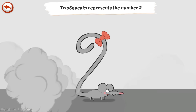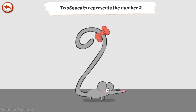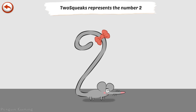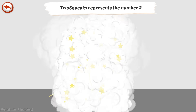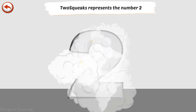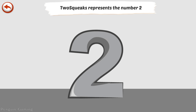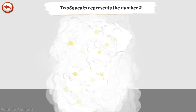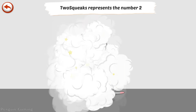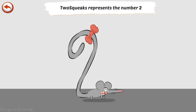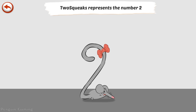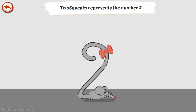2 Squeaks represents the number 2. 2 Squeaks is a very timid mouse. She gives a piercing screech when she is frightened.